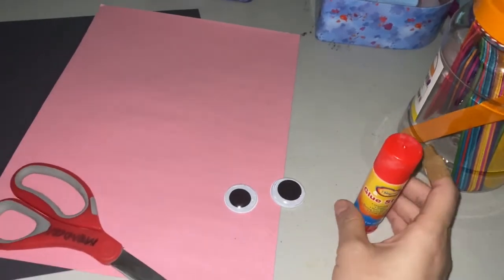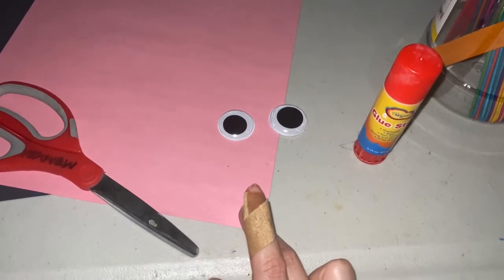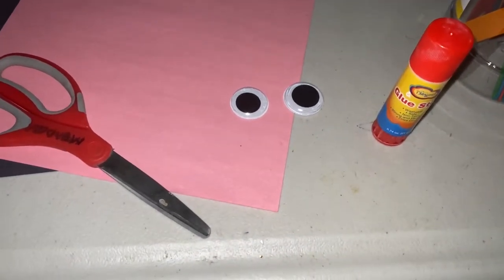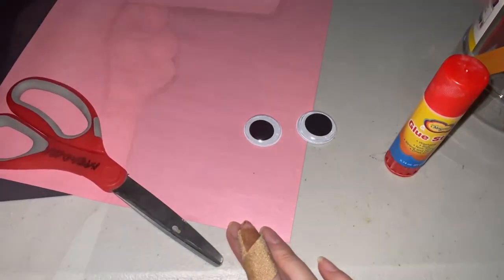If you guys don't have googly eyes, you can use white paper and use a black marker and create your eyes. The paper is for the beak.